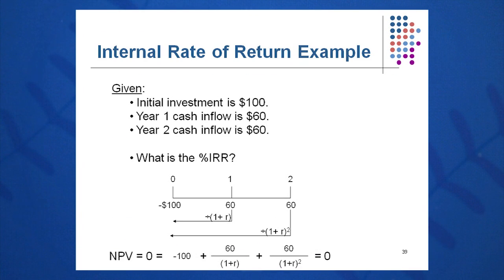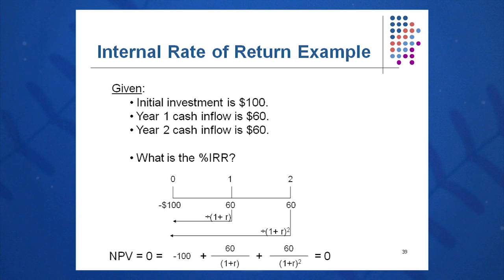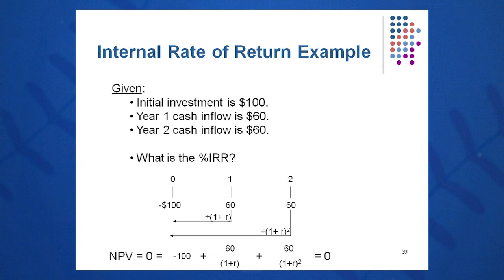Here's an example. When you see the letters IRR, write down on paper or type into Excel: NPV equals zero. That means: zero equals minus the first cash outflow, plus the first cash inflow over (1 + R), plus the second cash inflow over (1 + R)², plus the third cash inflow over (1 + R)³, and so on. Then solve this equation for R.